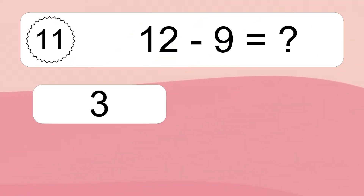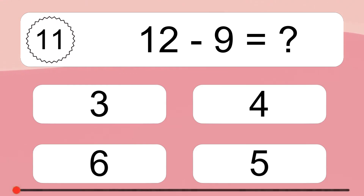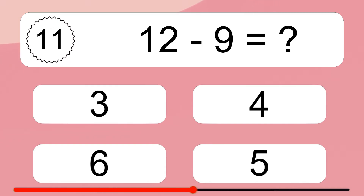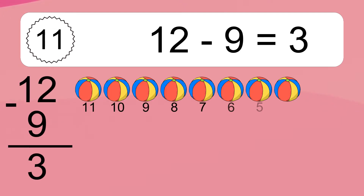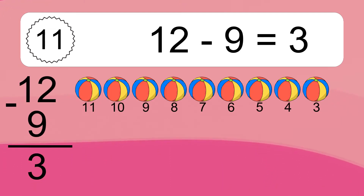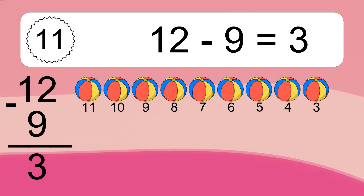12 minus 9 equals what? 12 minus 9 equals 3. Let's count it: 11, 10, 9, 8, 7...